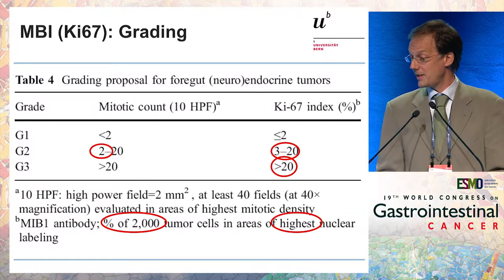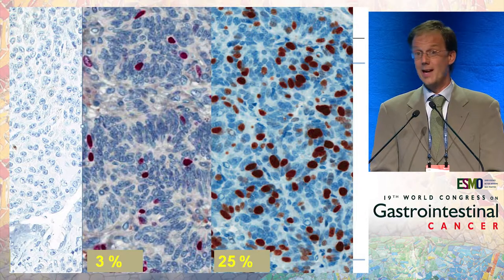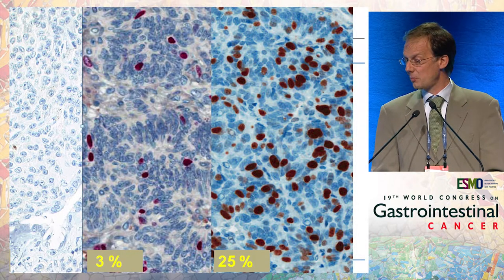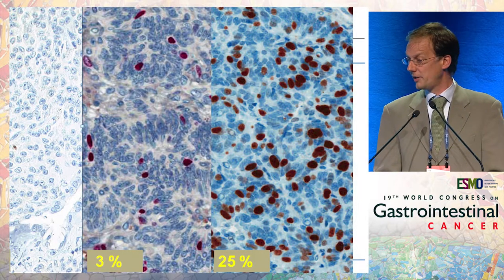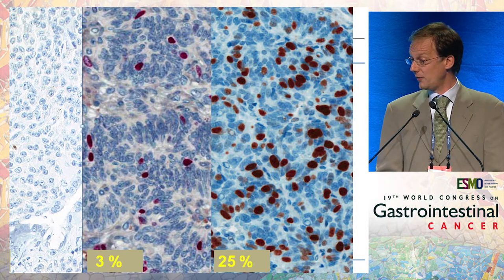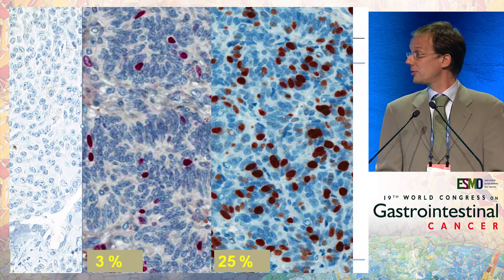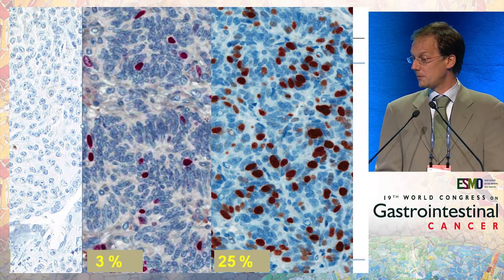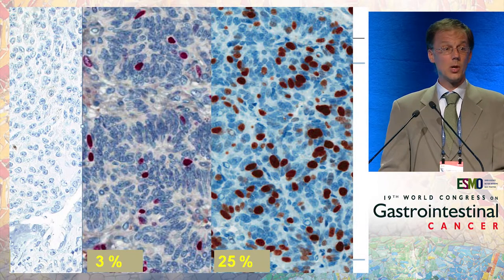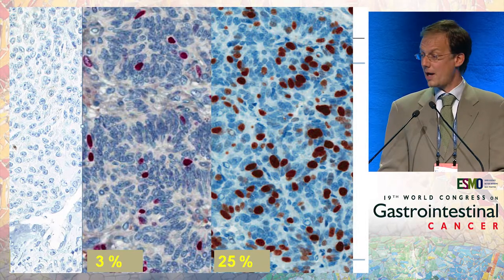Now there is evidence that this really makes sense. Here is one endocrine pancreatic tumor with one single positive tumor nucleus — 0.9% — so a G1 tumor. Then G2, and G3. This tumor is just on the borderline of G2/G3 with 25%, and this is actually the same patient — five years later, a relapse. So this is one tumor that progressed from low G2 to low G3, which would be one of the NET G3 tumors I come to later.